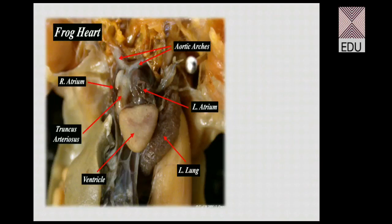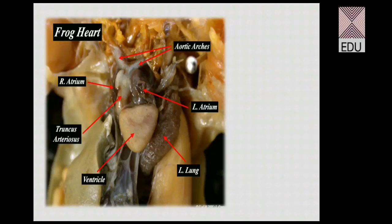The term 'truncus' refers to a trunk — it is a much more modified structure compared to the conus, but both have similar functions. The truncus arteriosus provides the pressure needed for blood to reach the aortic arches. These are the arteries into which blood flows from the heart. In coming sections we will take up the evolution of the aortic arches as a separate topic.